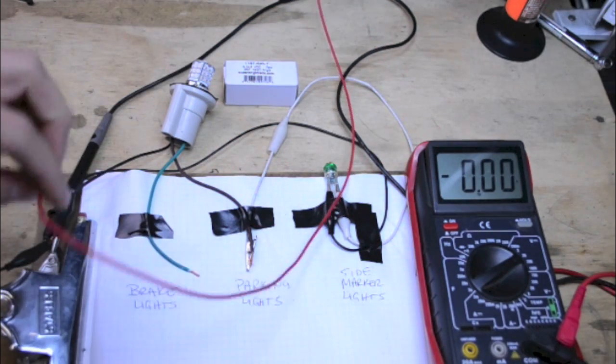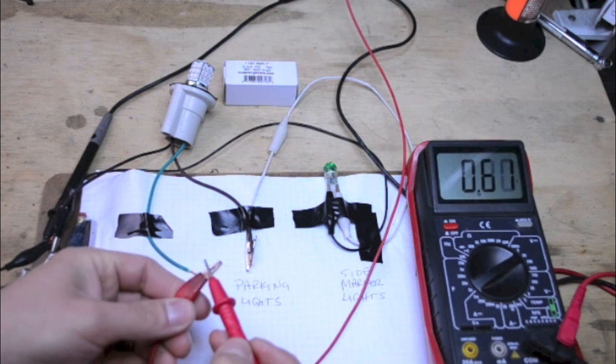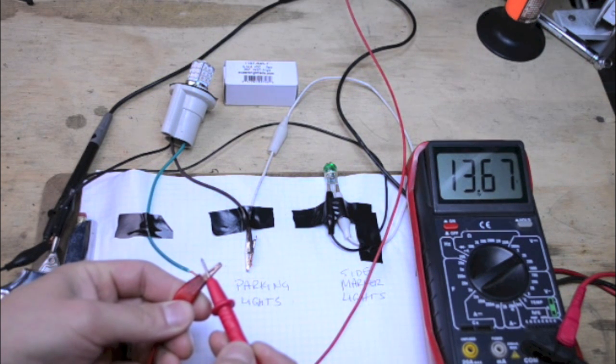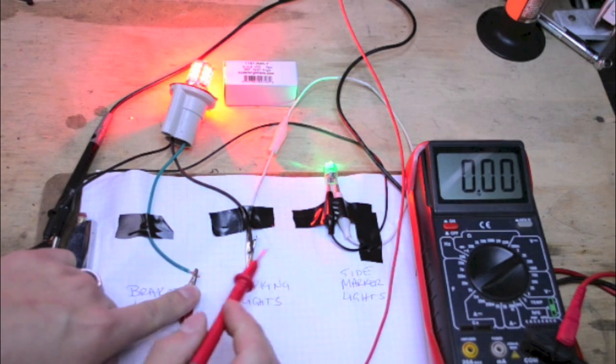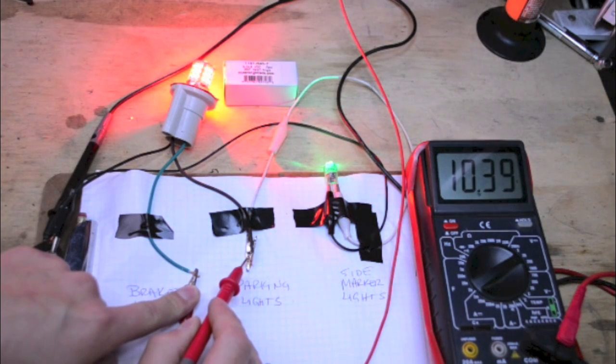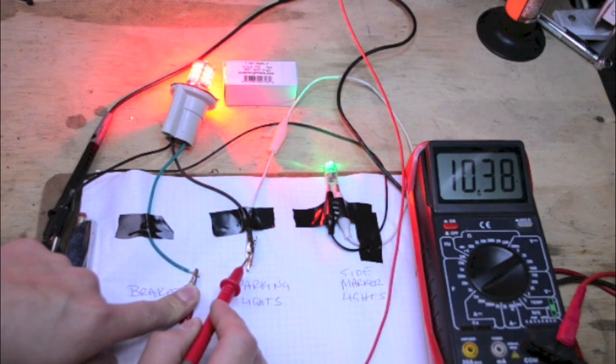This can also be seen with voltage. For example, our input source is about 13.6 volts. Applying that to the parking light input feeds back about 10 to 10.5 volts. Anything around this area, even less, is enough to light up side marker lights, especially if they're LED lights.